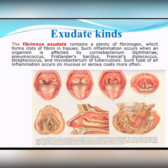An example of fibrinous exudation is diphtheria and some others. The fibrinous exudate contains a large amount of fibrinogen, which forms clots of fibrin in tissue.